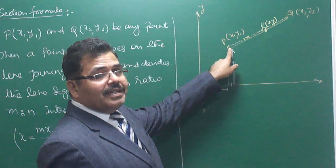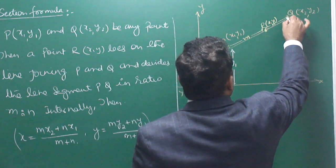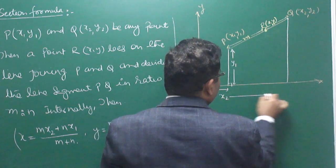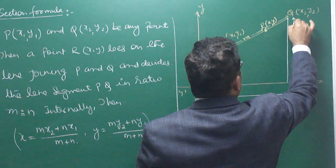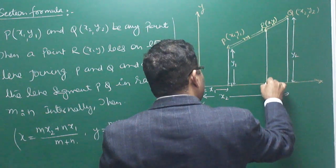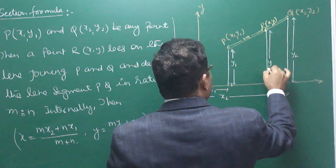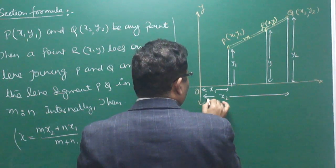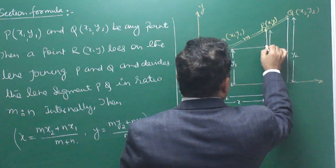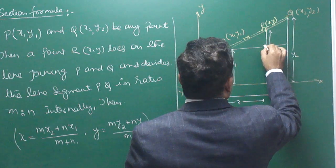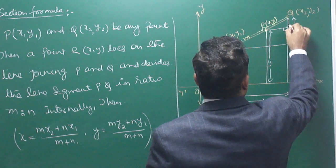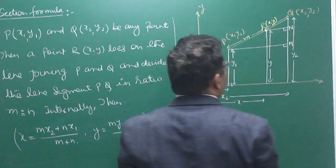Similarly, Q has coordinates (x2, y2), so the distance from the Y axis is x2, and the distance from the X axis is y2. If R has coordinate (x, y), then the distance from the X axis is y, and the distance from the Y axis is x. If we draw perpendiculars from P, R, and Q to the axes, we get two perpendiculars drawn on the base.